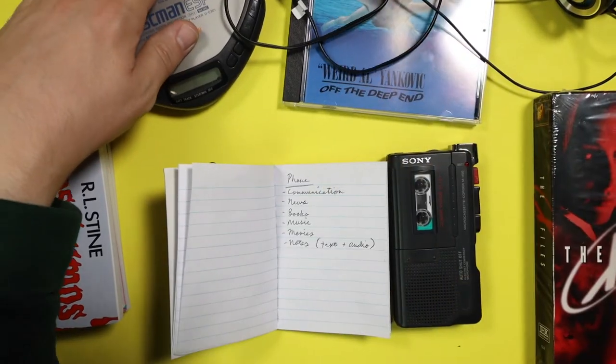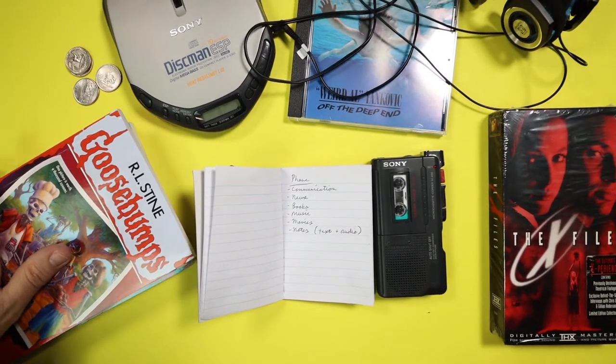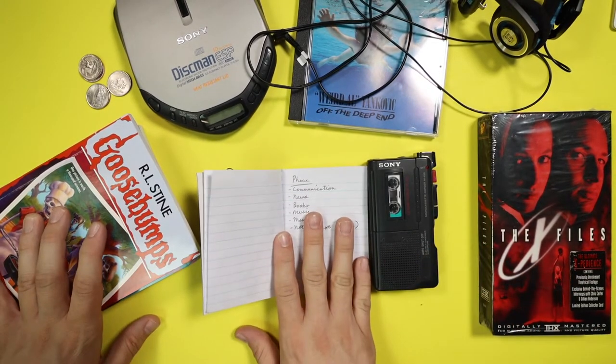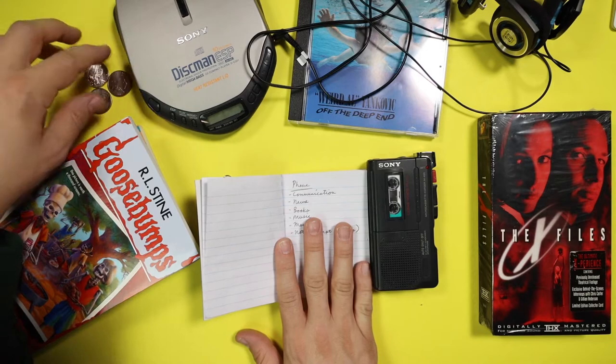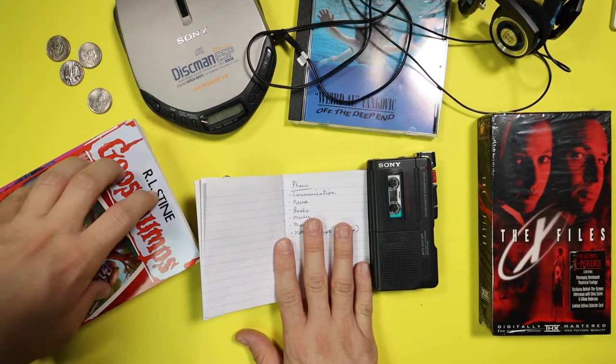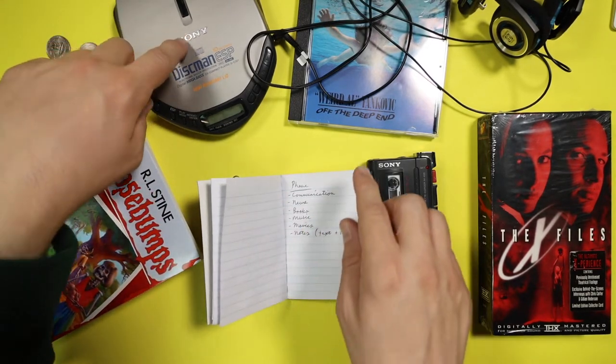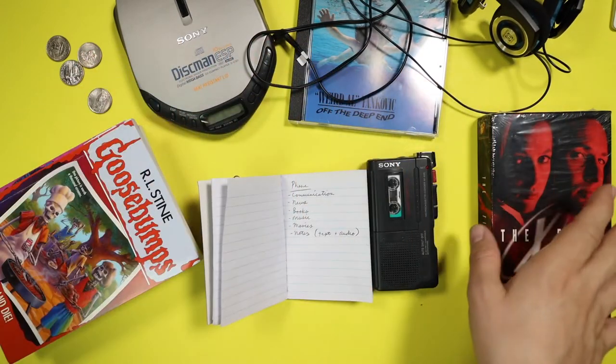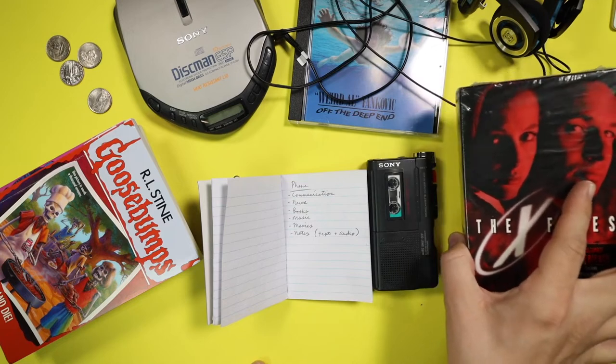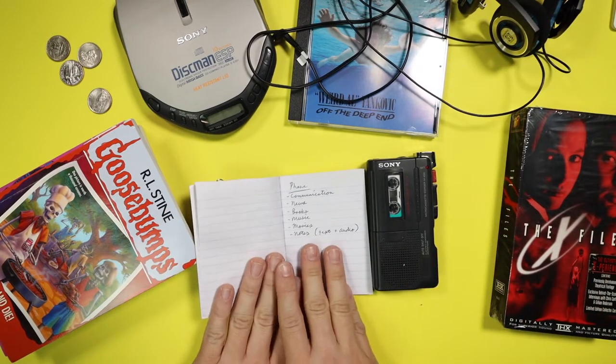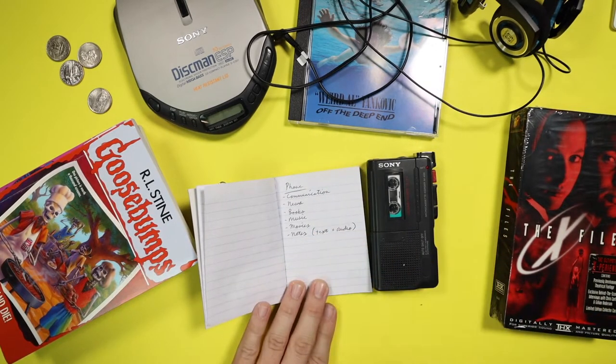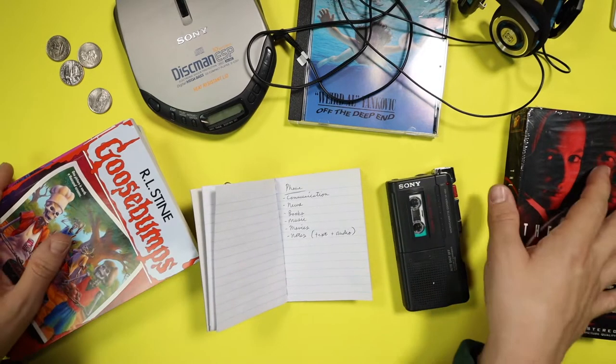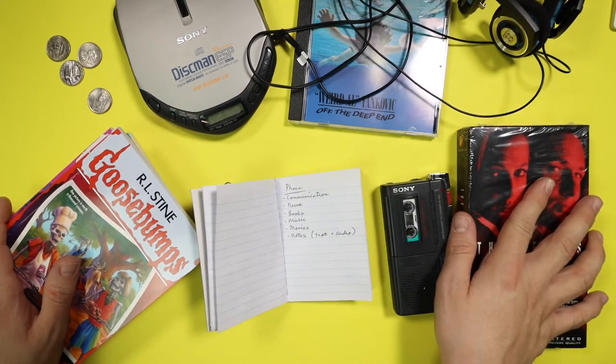So now let me go ahead and organize everything and zoom out a little bit. This is everything that we would need to replace a cell phone in the 90s. We have change to make phone calls on a payphone, physical books to read, a Discman as well as headphones and a CD to listen to music. We have a VHS to take over to our friends to watch. We have a physical notebook to take written notes. And we have a microcassette recorder to take voice memos. This is all coming with us in the 1990s.